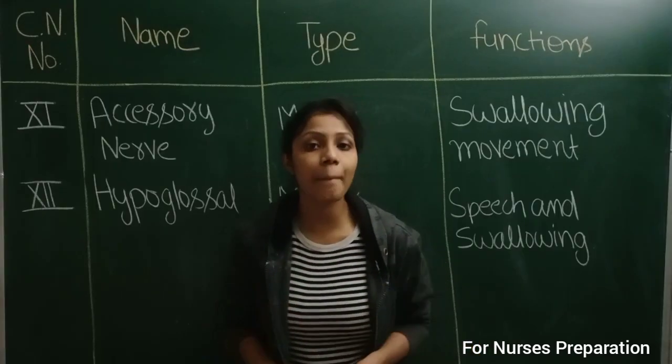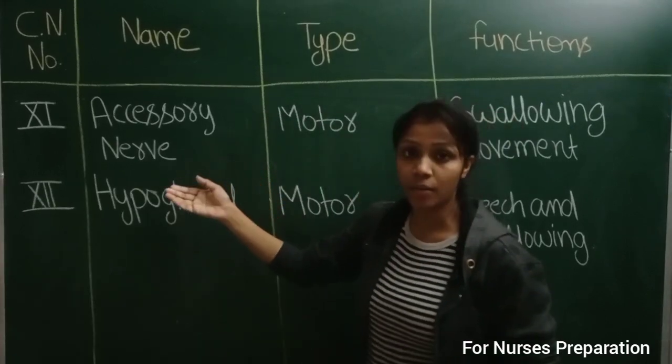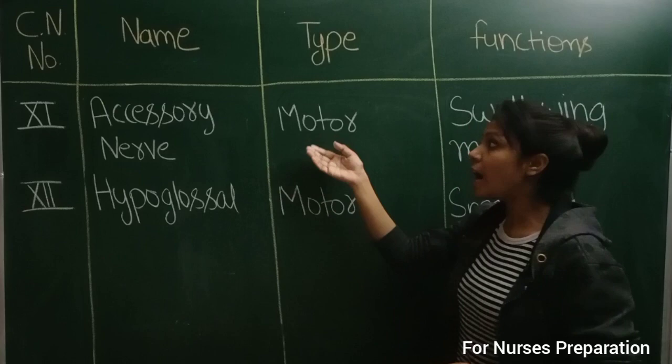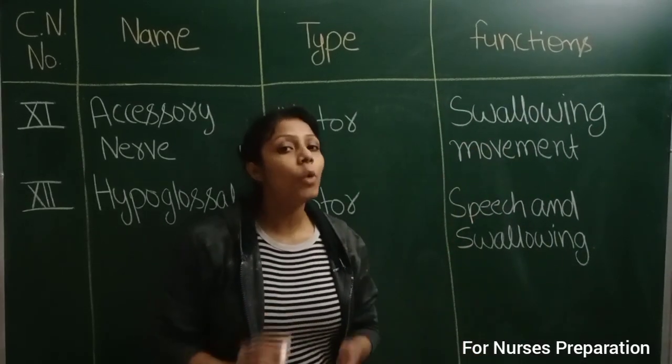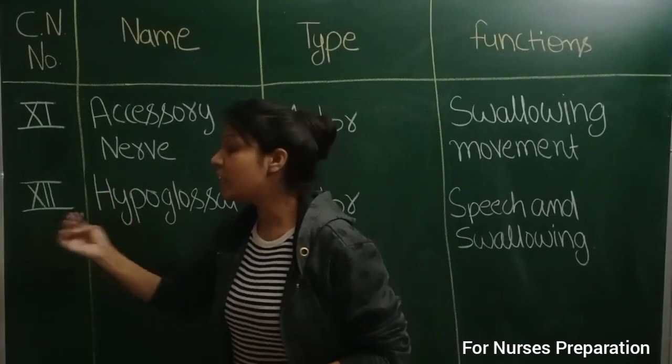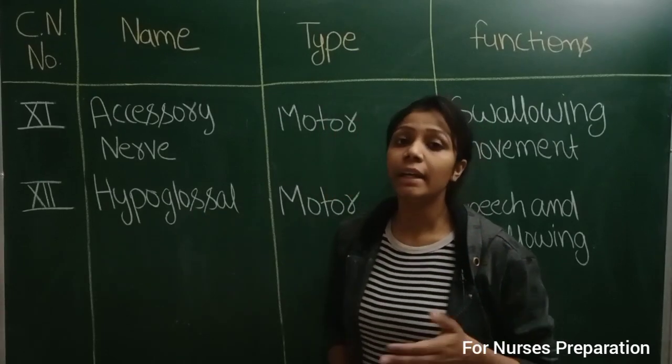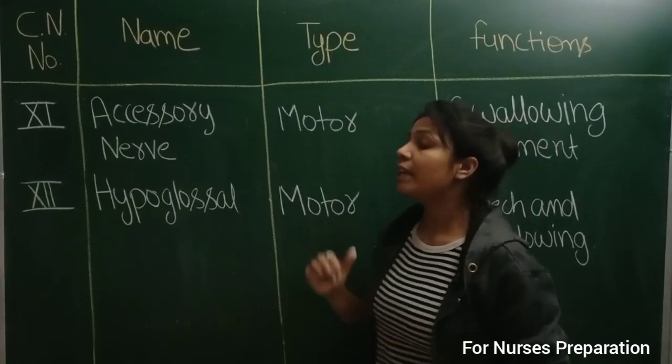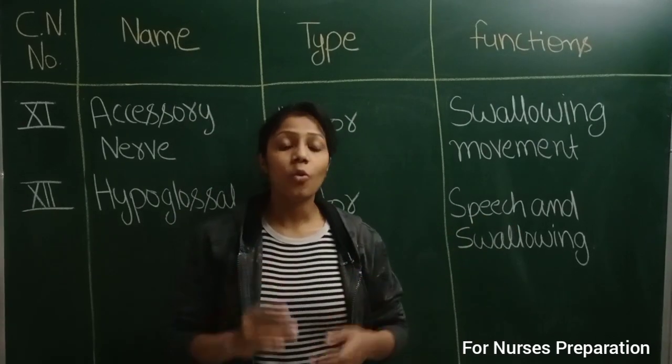Eleventh number cranial name is accessory nerve. It is motor in type and its function is swallowing movement. Next, which is twelfth cranial number is hypoglossal and it is motor in type and its function is speech and swallowing.